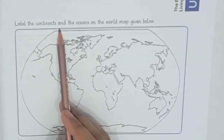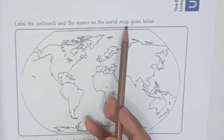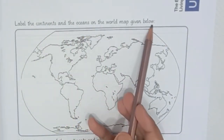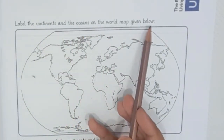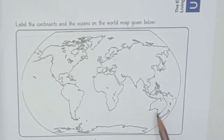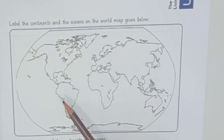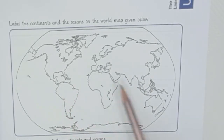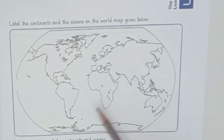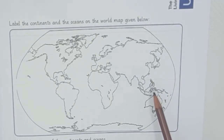Now we go to book page number 1. Label the continents and oceans on the world map given below. You have a map. You have to solve this and label it. You have to see continents and oceans in your textbook. There is a map given — you have to label it and color it.